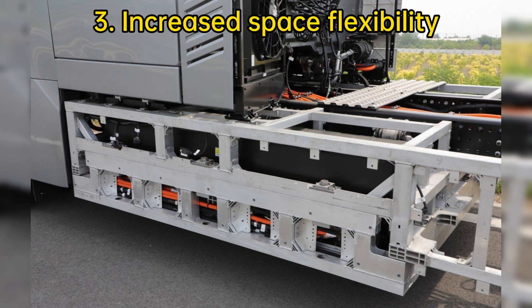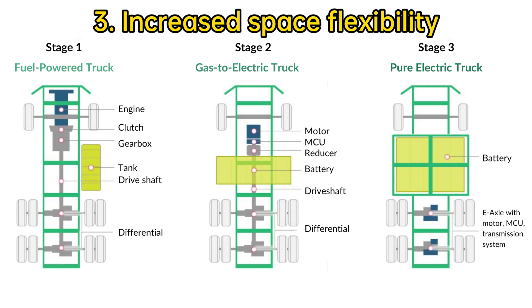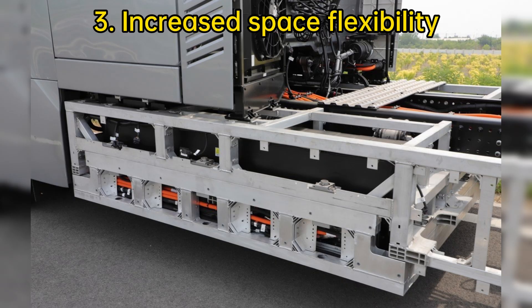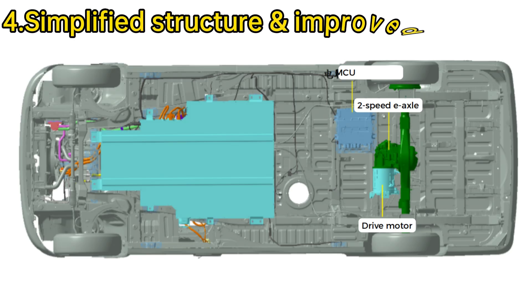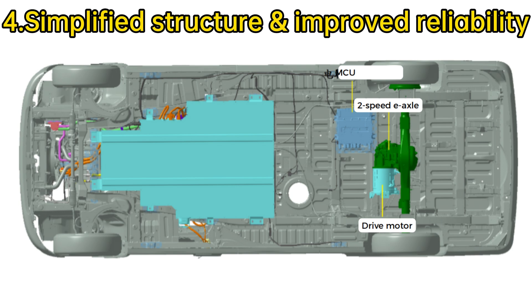Third, increased space flexibility. In the traditional setup, the motor, drive shaft, and gearbox occupy space within the chassis. Removing these components frees up space for additional batteries, further extending the vehicle's range. Fourth, simplified structure and improved reliability — with fewer complex and redundant parts, the e-axle structure is simpler and more reliable, resulting in lower failure rates.